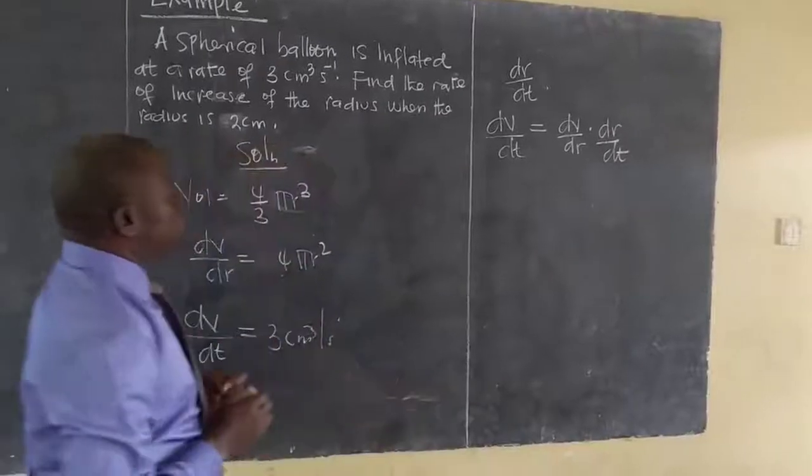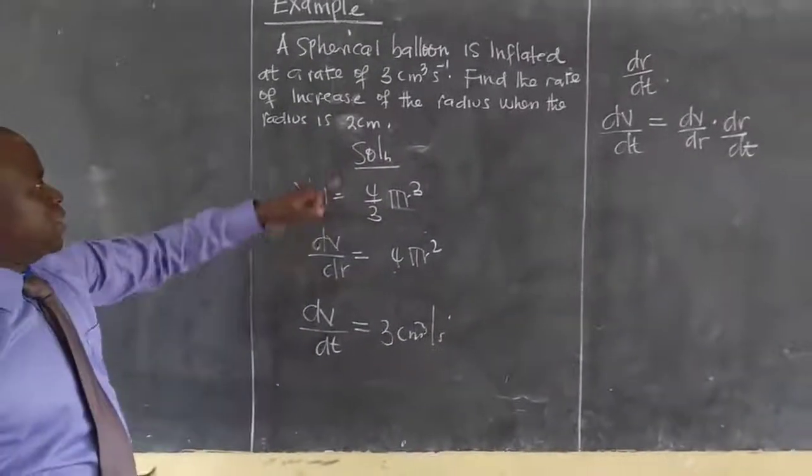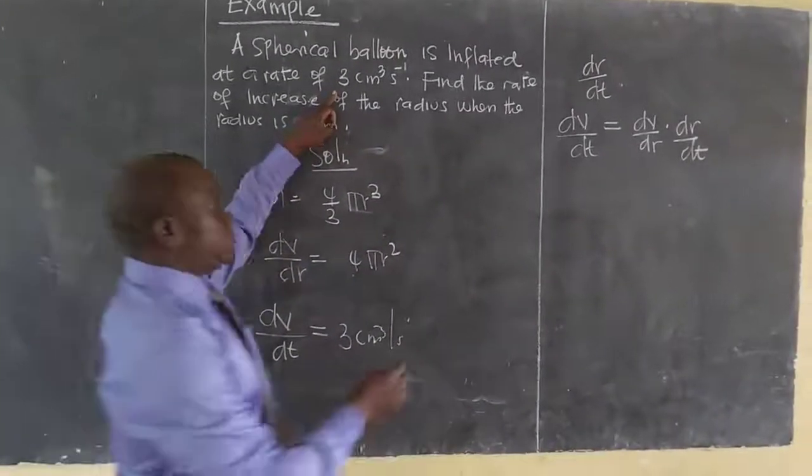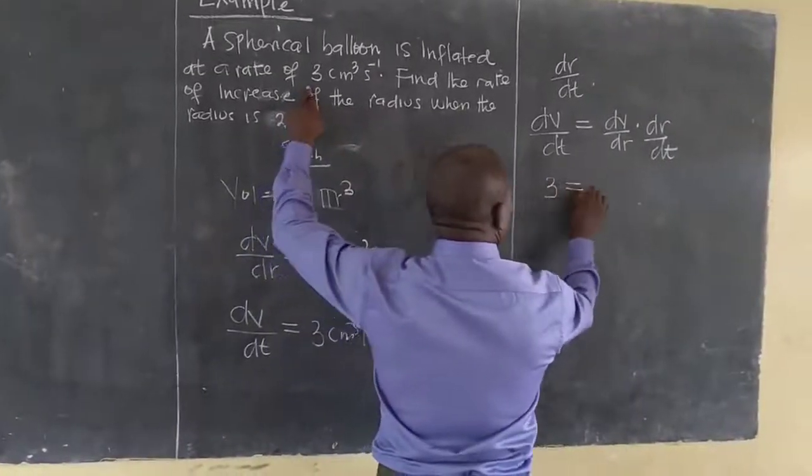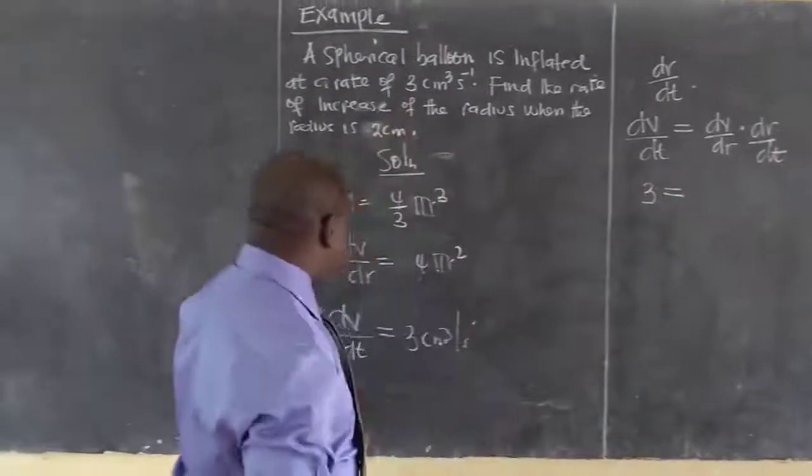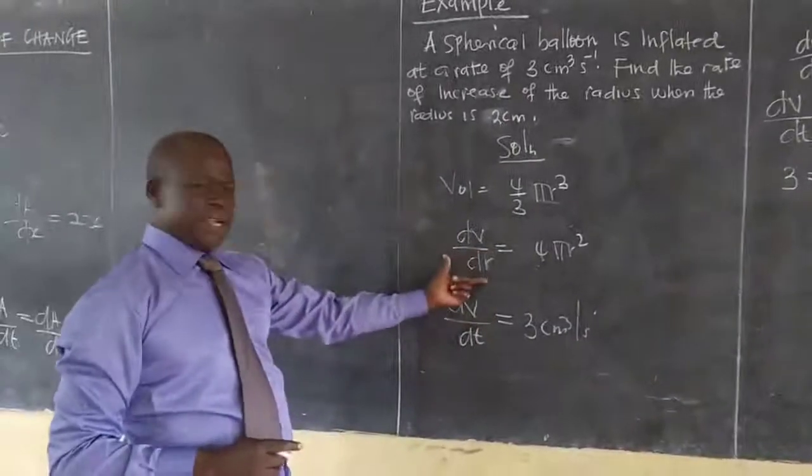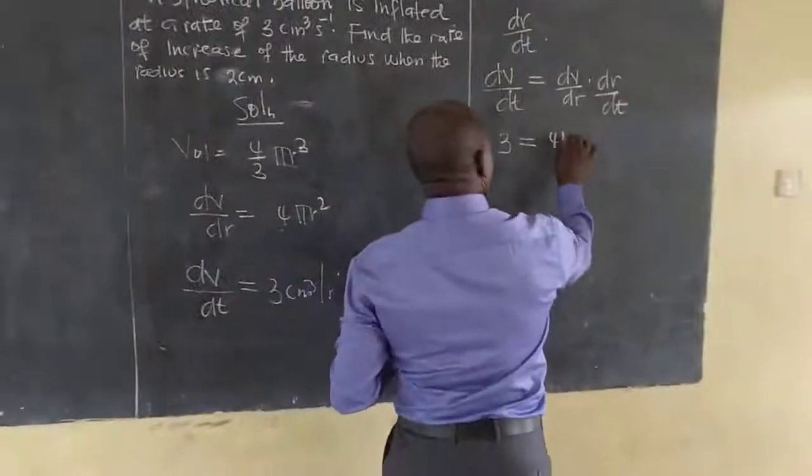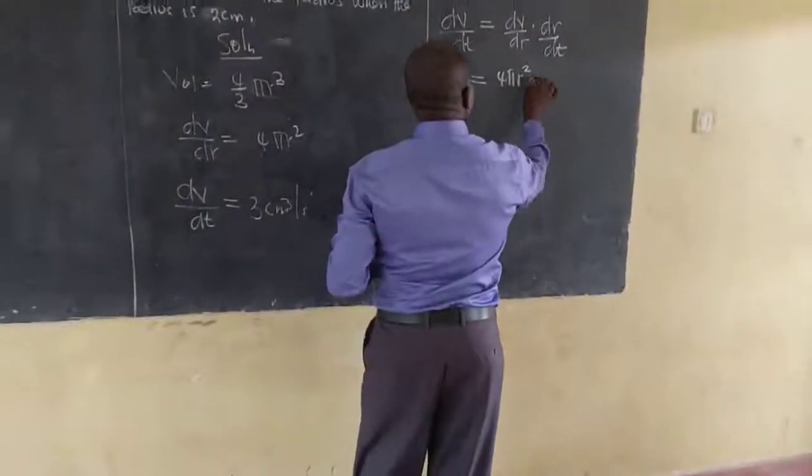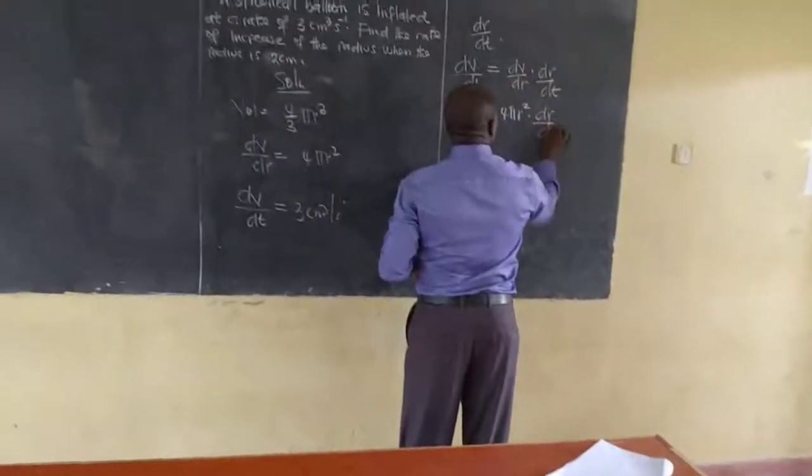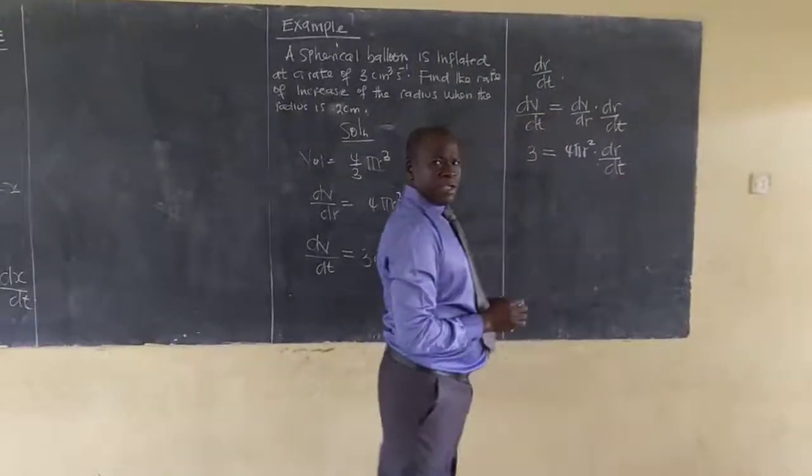Now, do I know dV/dt? The dV/dt is given here. So, I can substitute my 3 for dV/dt equals dV/dr. I know the dV/dr which is here, 4 pi r squared, and then times my dr/dt which I am looking for.